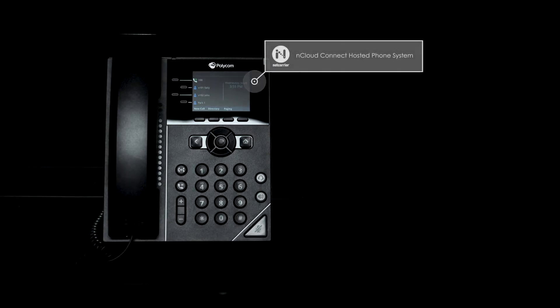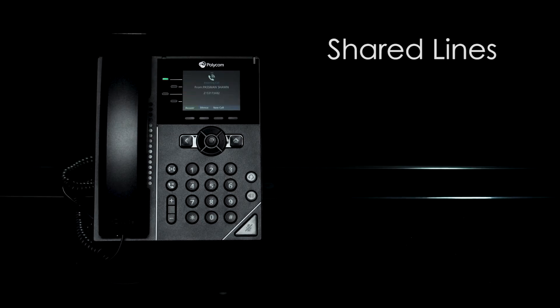Welcome to the mCloud Connect hosted phone system tutorial. In this video, you'll learn about shared lines. Shared lines allow a user to place a call on hold and have it picked up on another phone that shares that same extension. This is useful when several people in the office share the responsibility of answering calls, but do not need their own individual extensions.